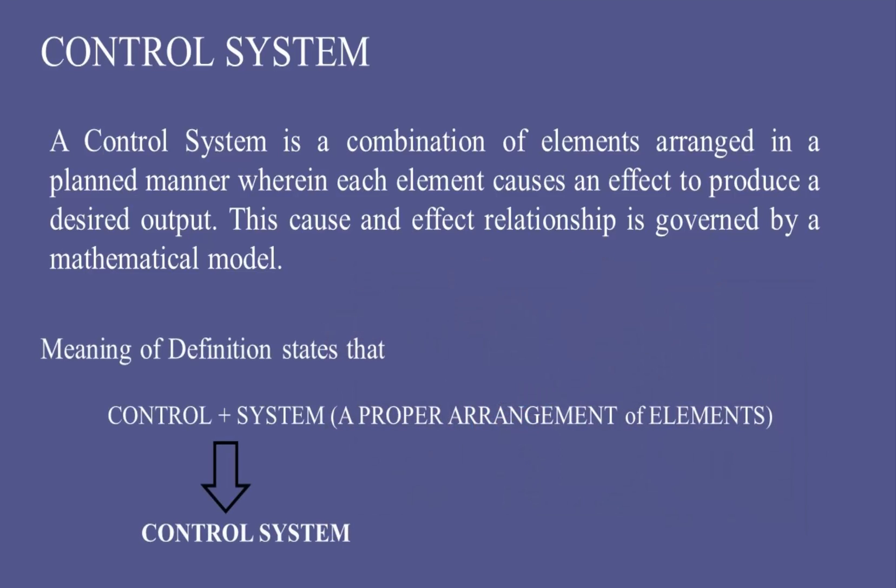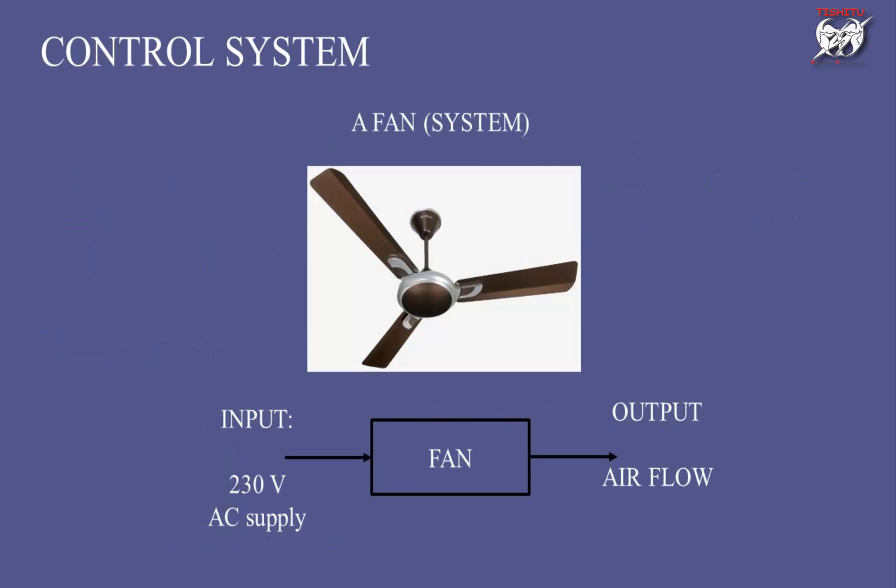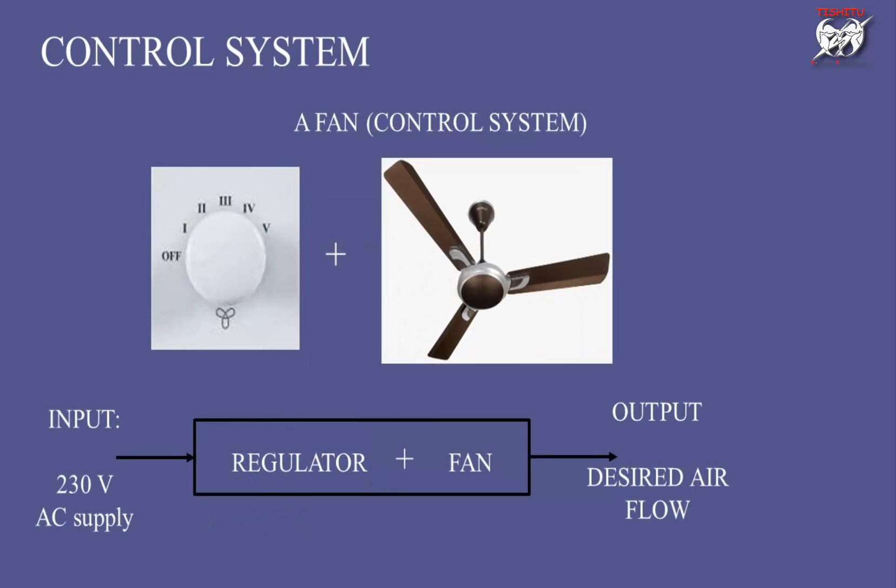The definition states that control plus system become a control system. A proper arrangement of elements is known as a system. For example, a fan is a simple system. For a fan, we have an input 230V AC supply and get an output as air flow. When a fan is combined with a regulator, it becomes a control system. For the same input, we get a desired air flow.